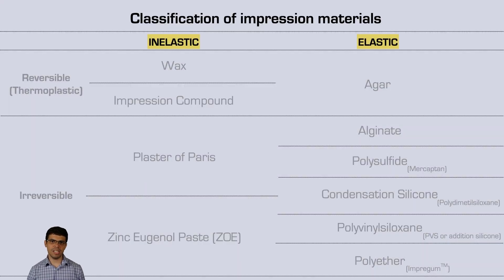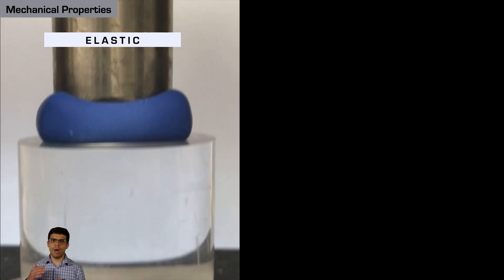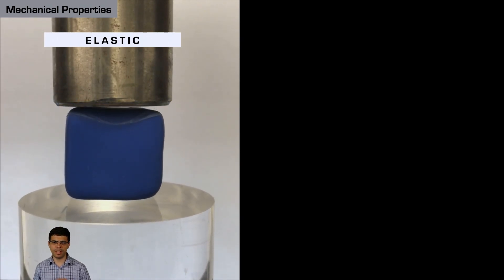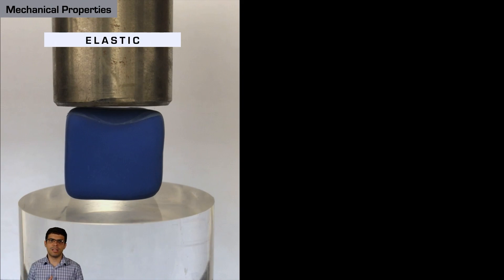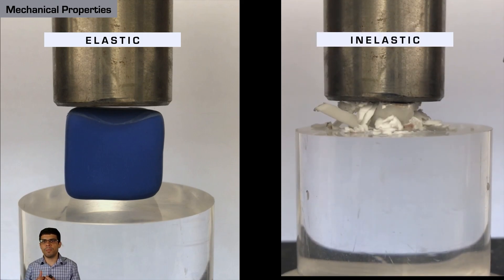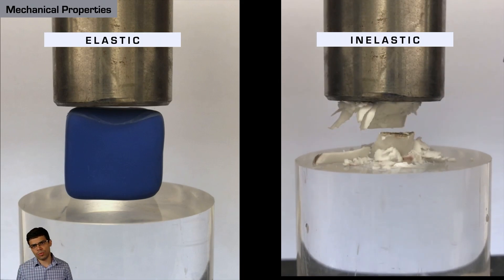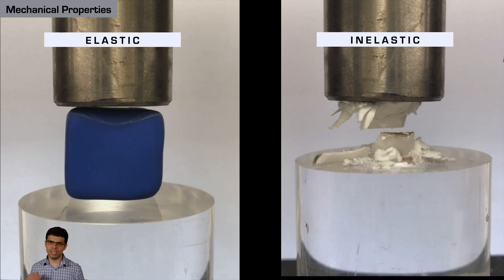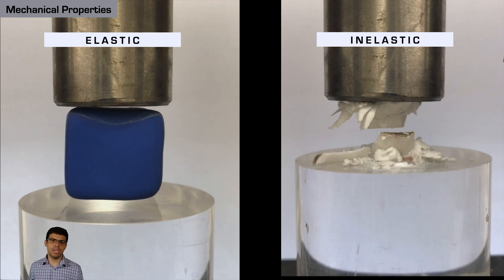Materials can also be inelastic or rigid, and elastic. The elastic material will allow forces to compress or apply tension, and once those forces are removed, the material will recover to its original shape — that's called elastic recovery. Inelastic materials will be permanently deformed. For example, impression compound is used for border molding in complete dentures. Once the material is set, you cannot have any type of deformation — the material will fracture. So impression compound is only for border molding in edentulous patients.